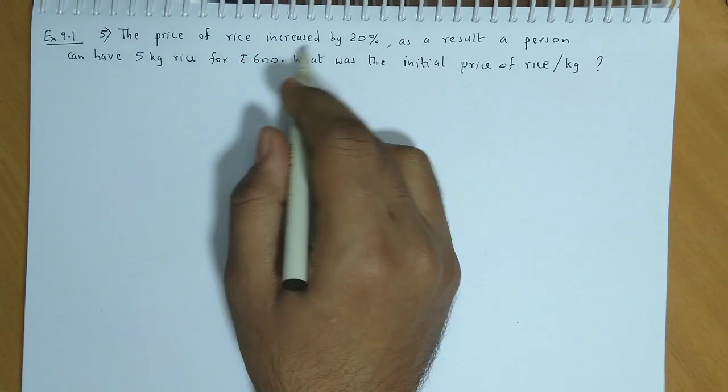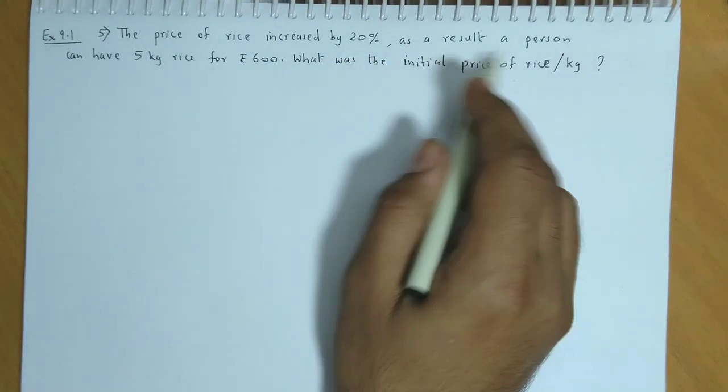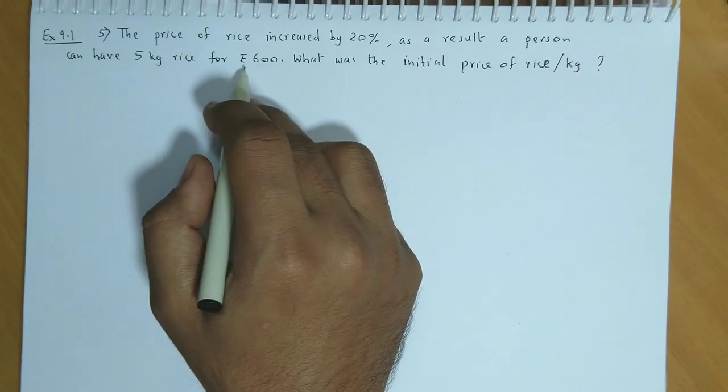The price of rice increased by 20%. As a result, a person can have 5 kg of rice for Rs. 600.